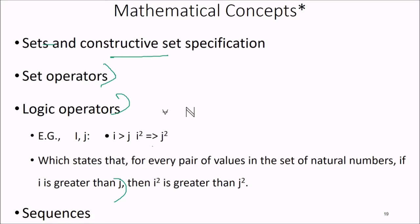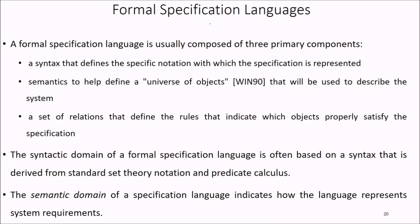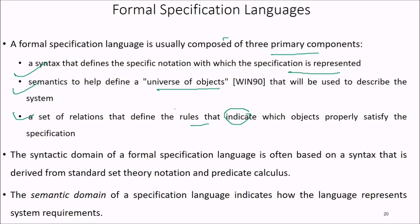Mathematical concepts used include sets and constructive set specification, set operators, logic operators, and sequences. A formal specification language is composed of three primary components: a syntax, a semantics, and a set of relations. Syntax defines the specific notation with which the specification is represented. Semantics defines the universe of objects used to describe the system. The set of relations describes rules indicating which objects properly satisfy the specification.